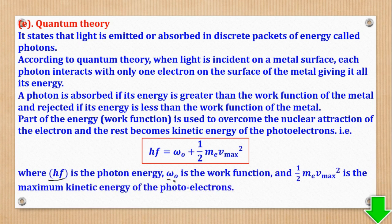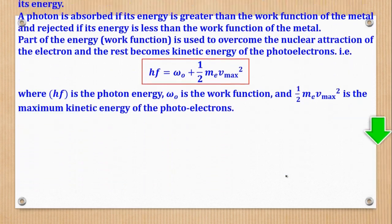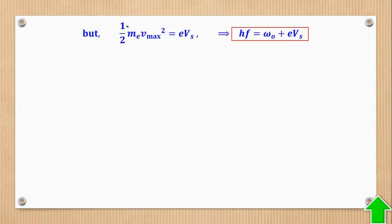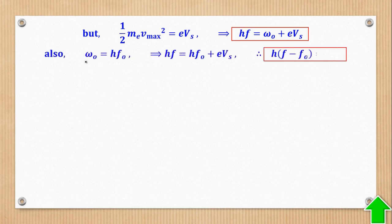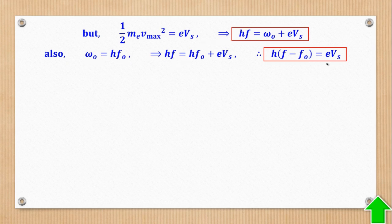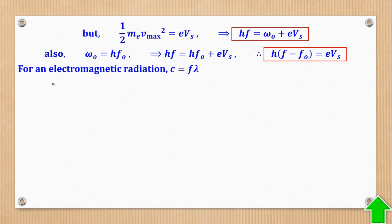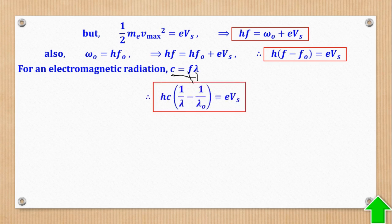To summarize: photon energy = work function + maximum kinetic energy. Since maximum kinetic energy = EVs, we can substitute to get that equation. Also, since work function = hF₀, substituting and factorizing gives a further expression. For electromagnetic radiation, C = Fλ, so substituting frequency gives us the formula in terms of wavelengths: hC(1/λ − 1/λ₀) = Ke_max.